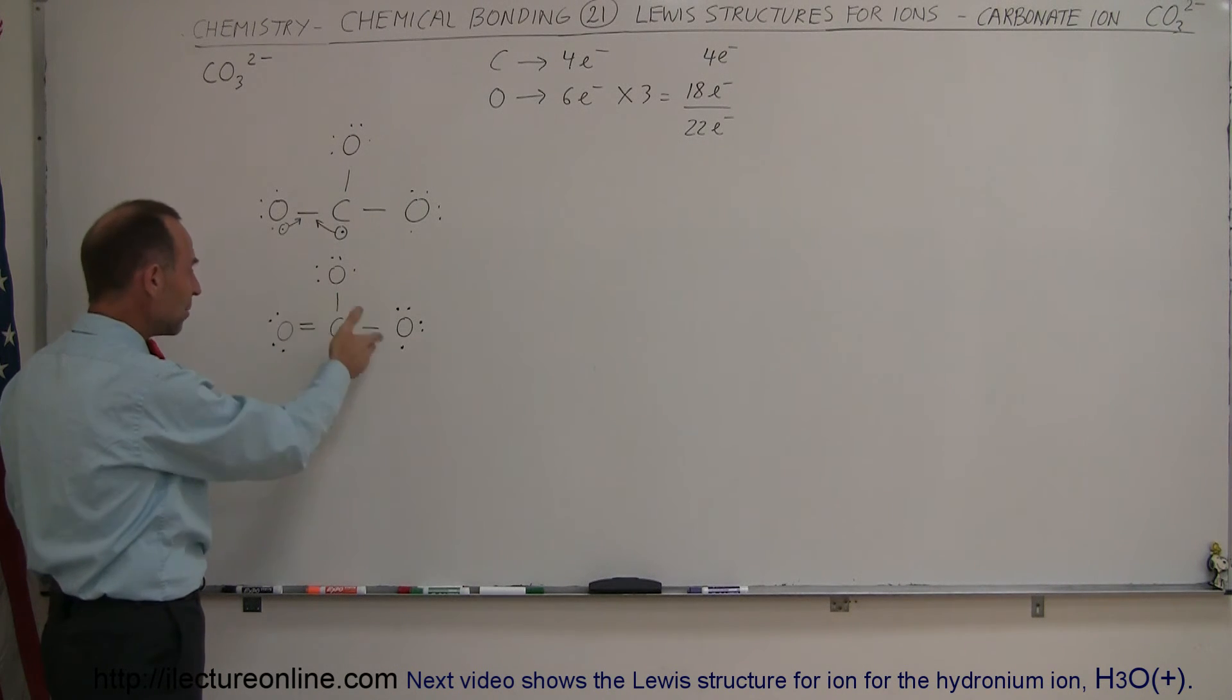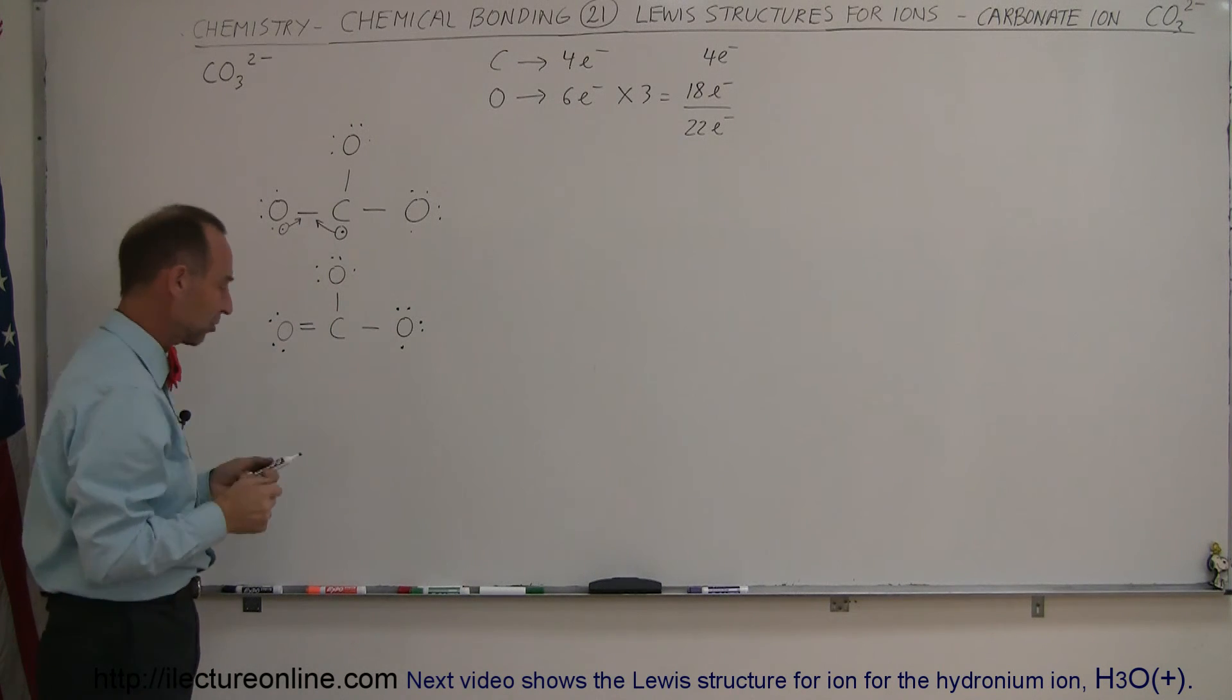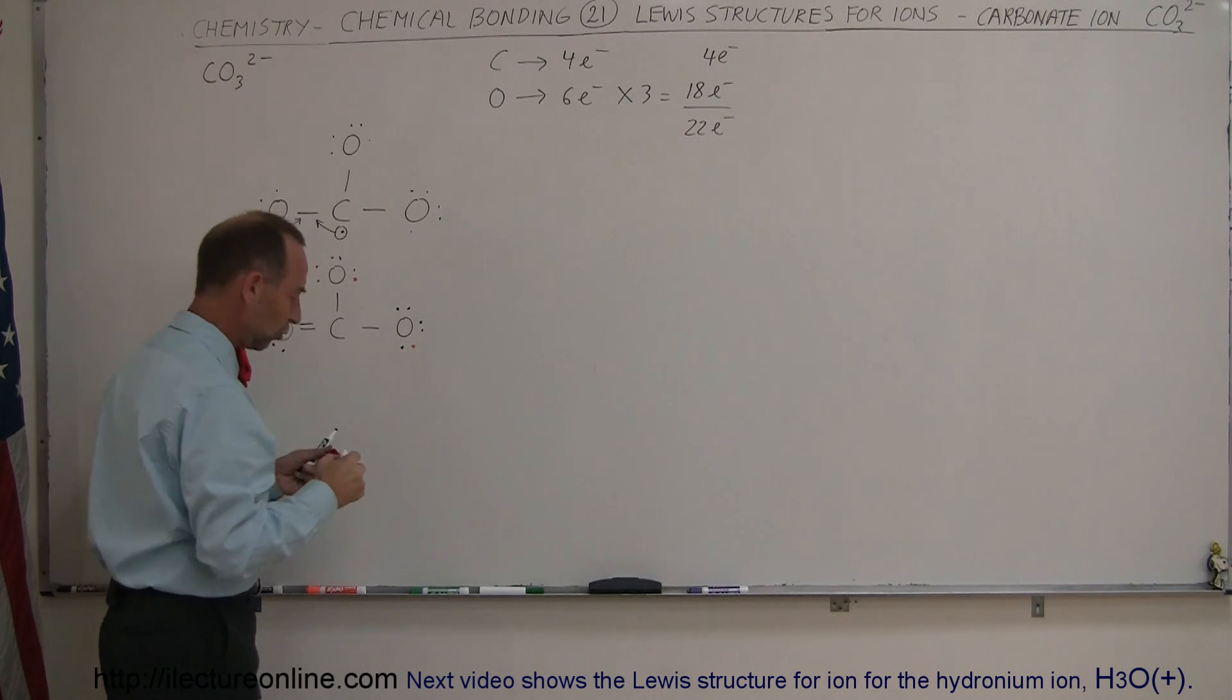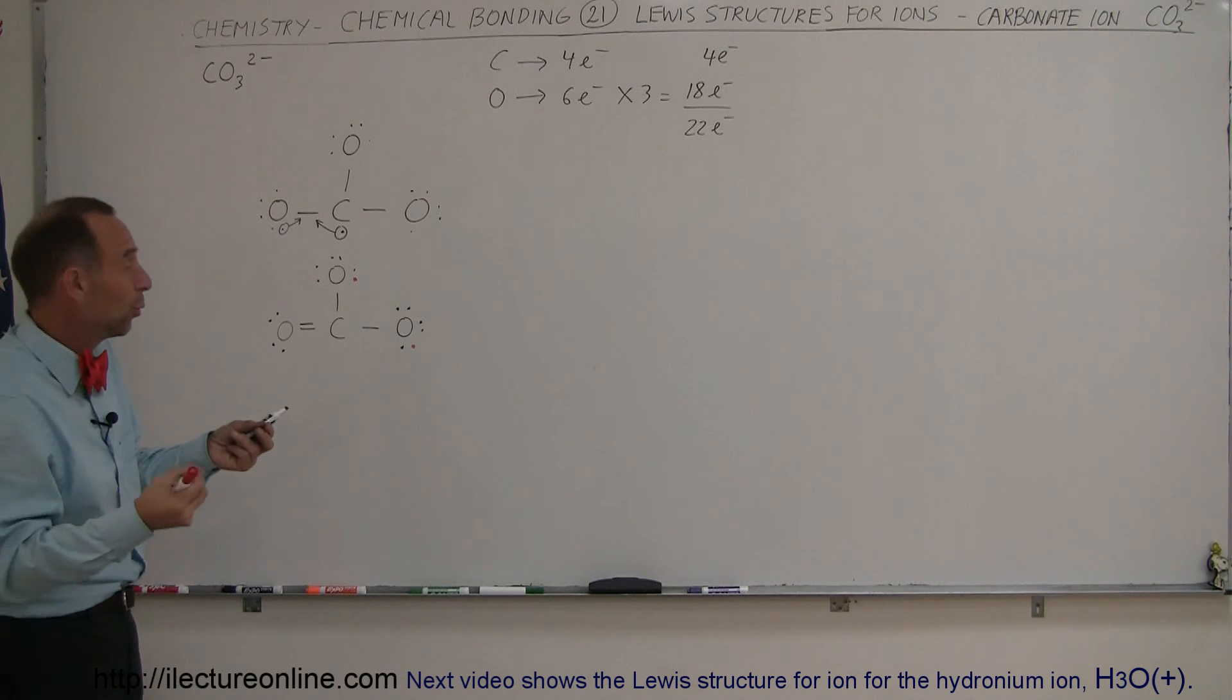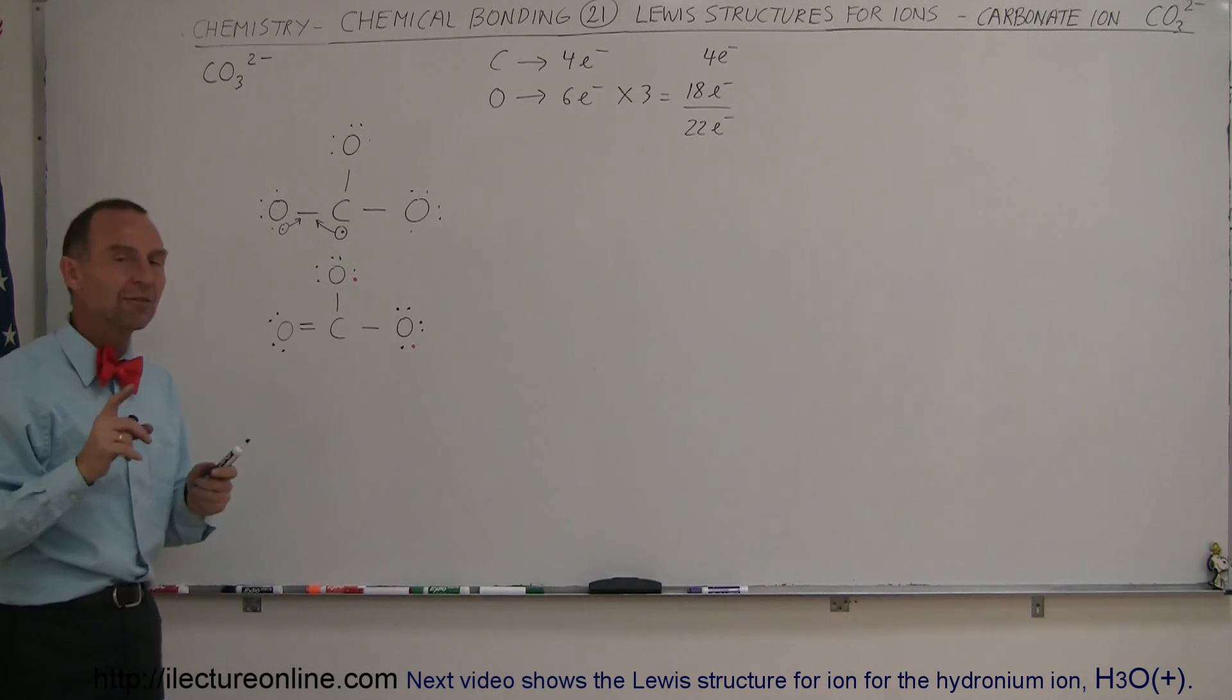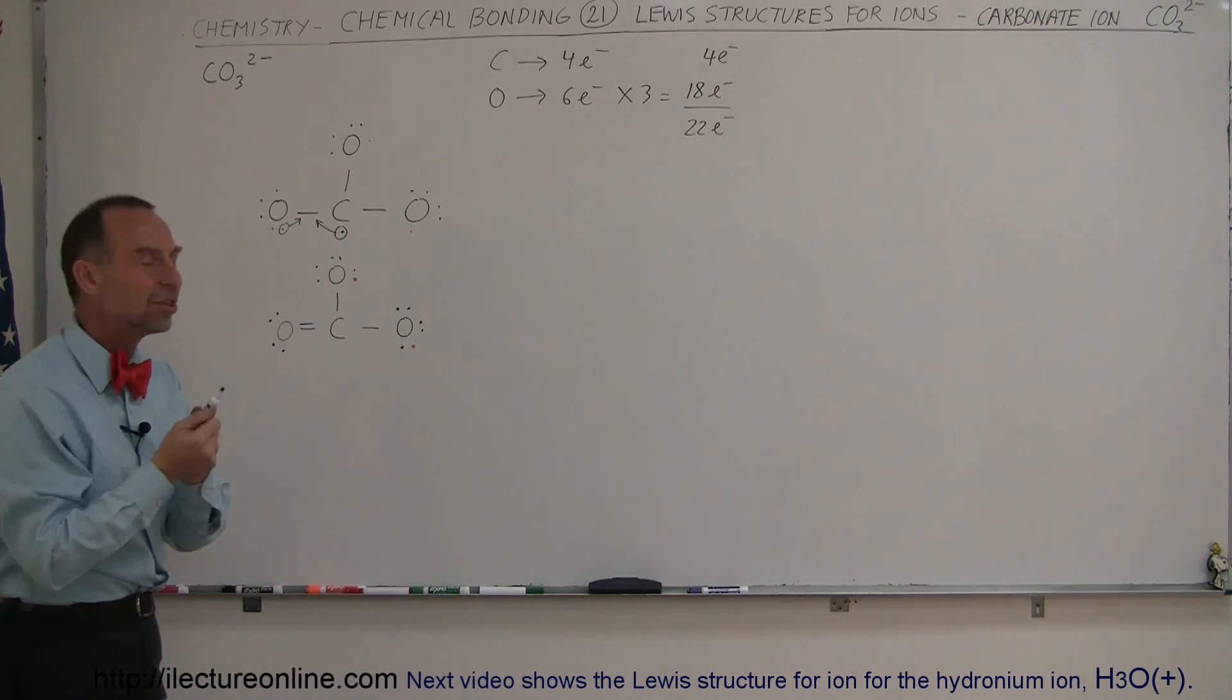So instead of making more bonds, which is not possible, these oxygens will pull in an extra electron. So it's going to pull in an extra electron there, an extra electron there, to satisfy the octet rule. Now, of course, where do those two electrons come from? They have to come from somewhere else. They're being brought in, so now we probably have not the right number of electrons there. We pulled in additional electrons.